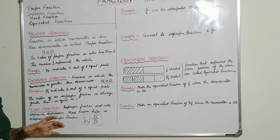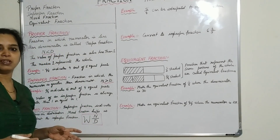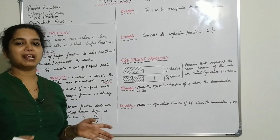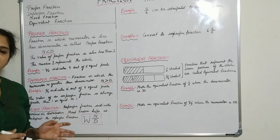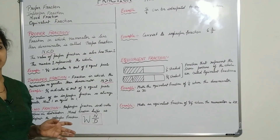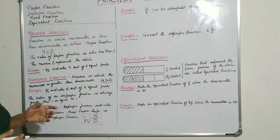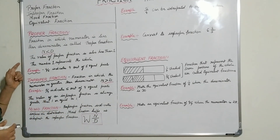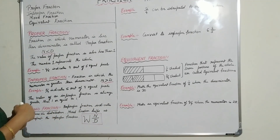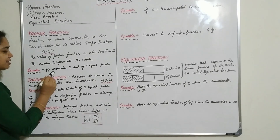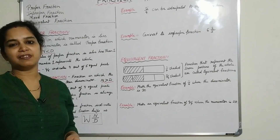For example, 4 by 5 indicates 4 out of 5 equal parts. It is not like 5 by 4, because 5 out of 4 equal parts is not possible. In a proper fraction the numerator is always less than the denominator, so 4 by 5 and 6 by 7 are good examples of proper fractions.